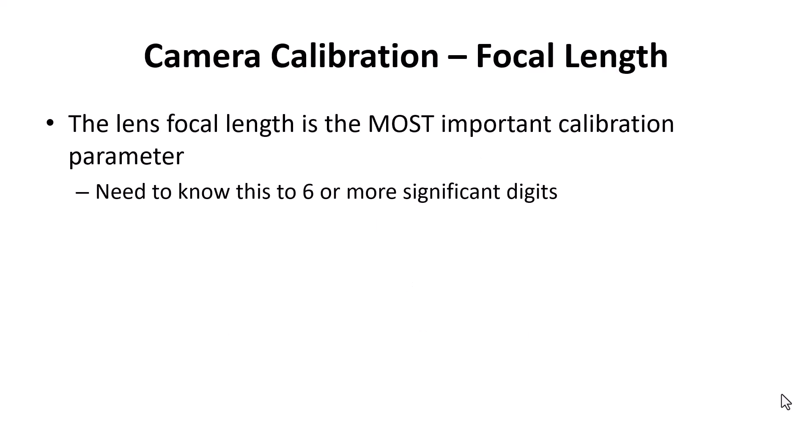When we do a camera calibration, the most important thing we determine is the camera lens focal length. We need to know this to about six or more significant digits. Everything that is produced through the photogrammetry software is going to be scaled according to that focal length, so it becomes a very important parameter.